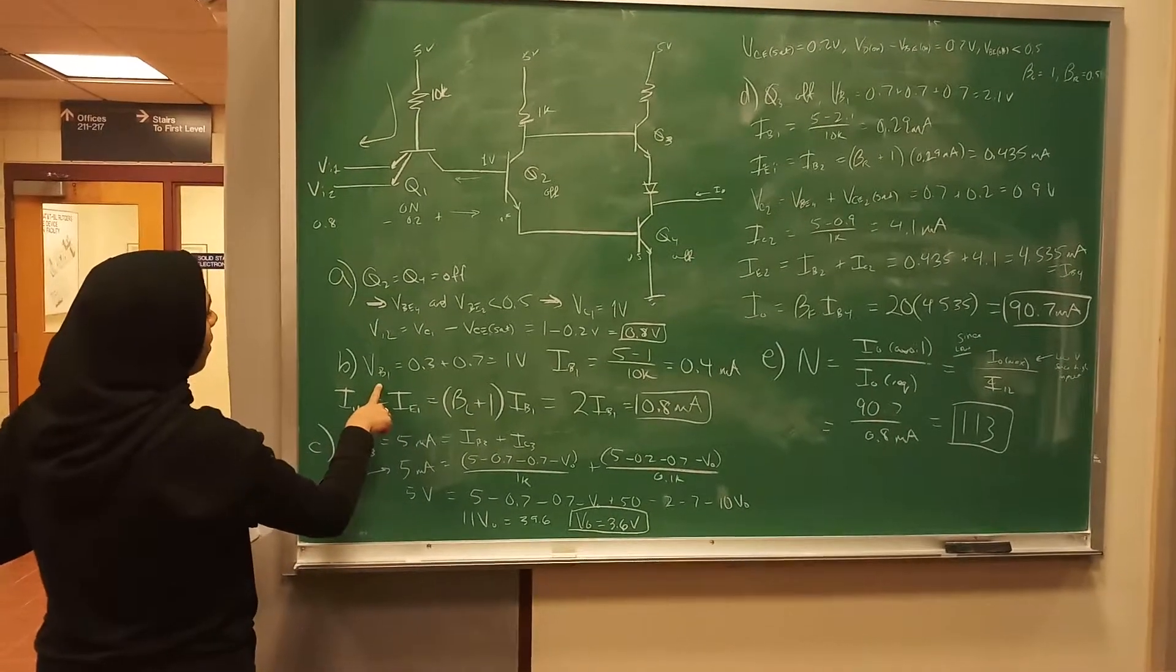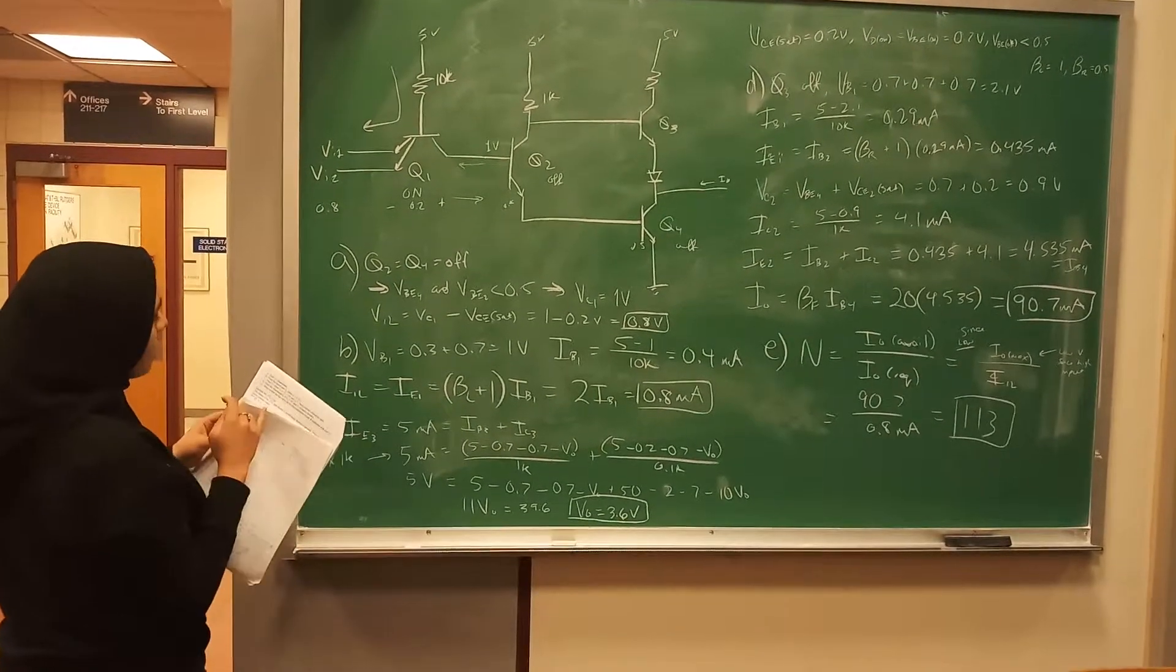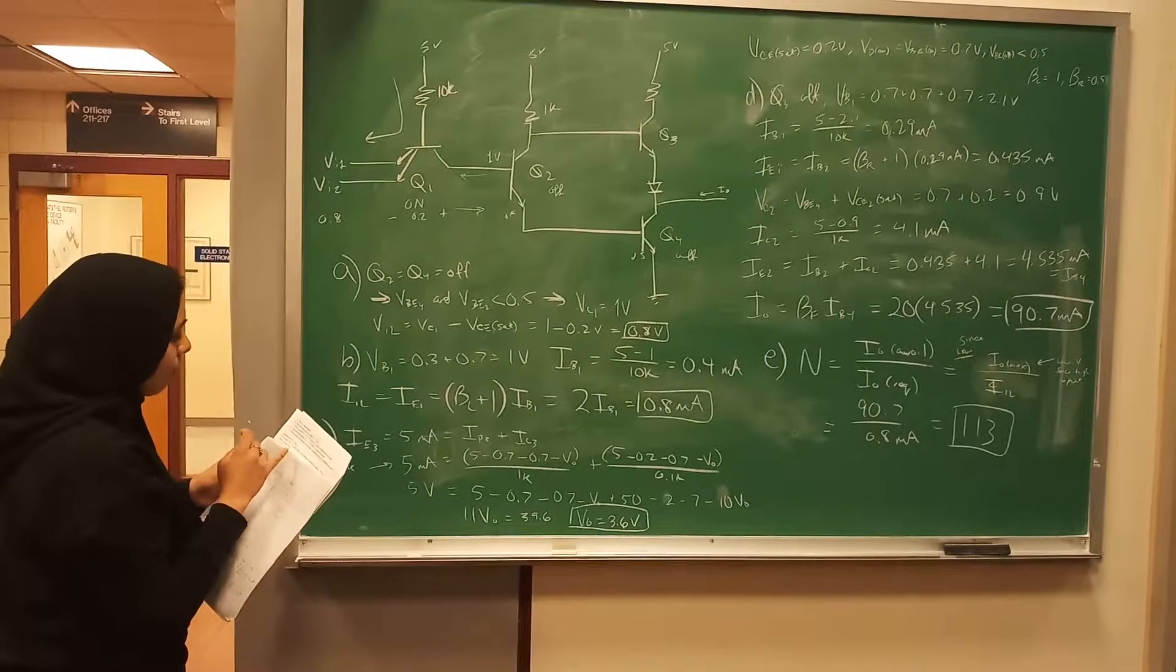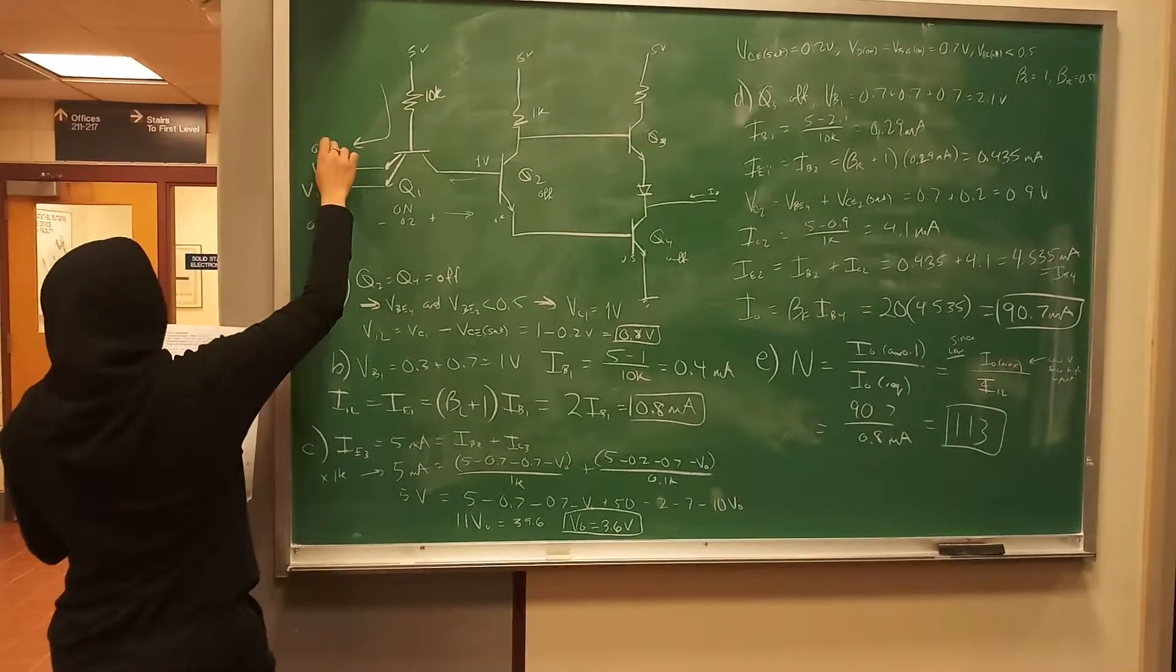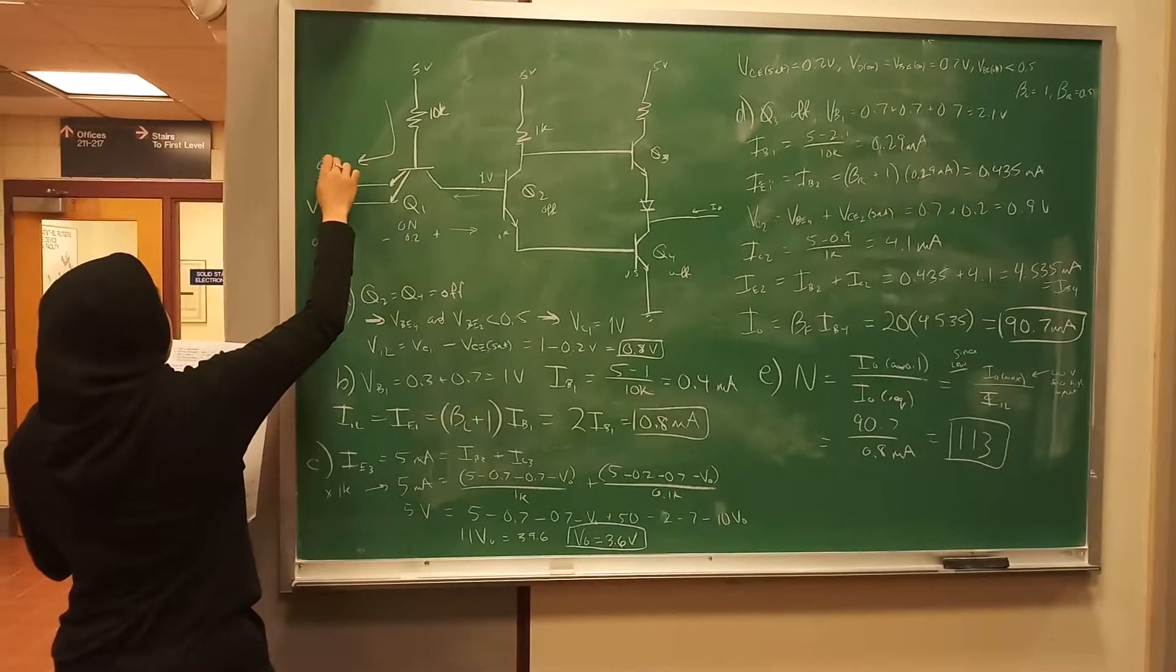And then for Part B, what are they asking? Worst case I_input_low when V_input is 0.3 volts. So you're saying that this is 0.3 volts here.